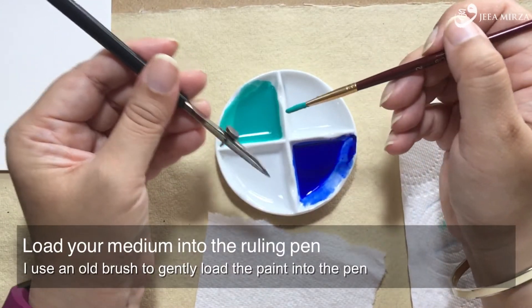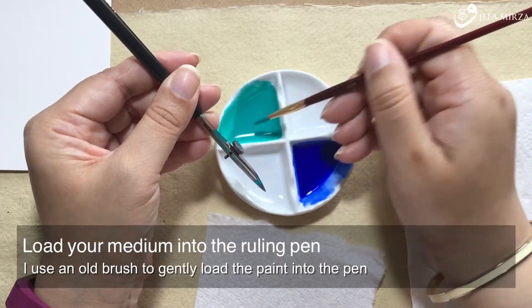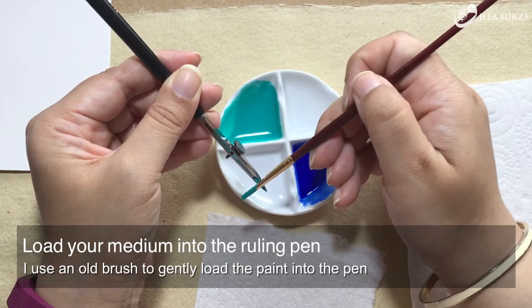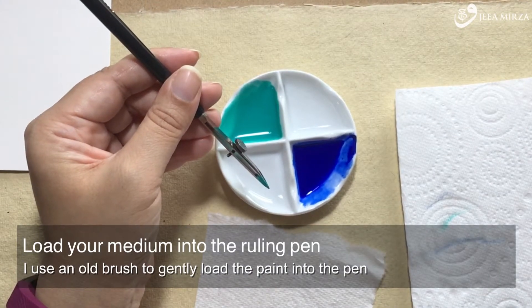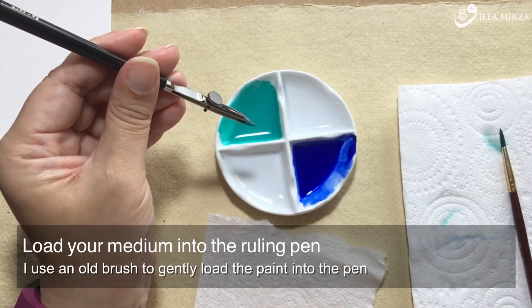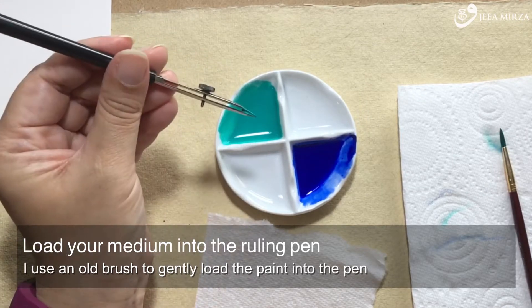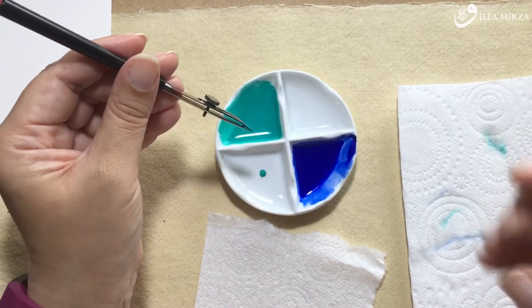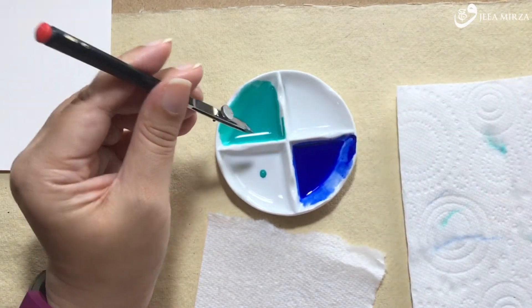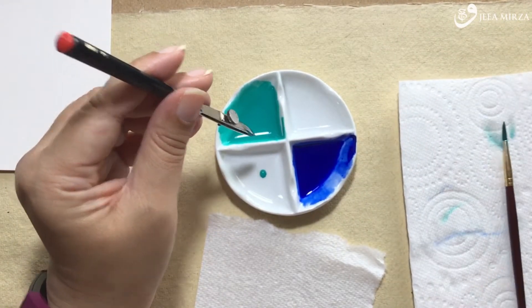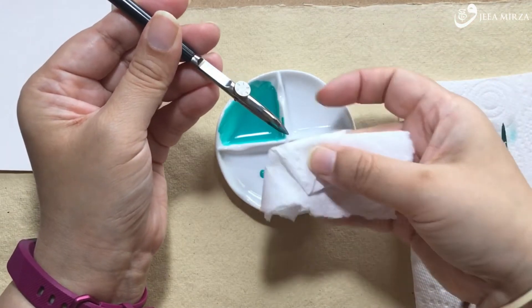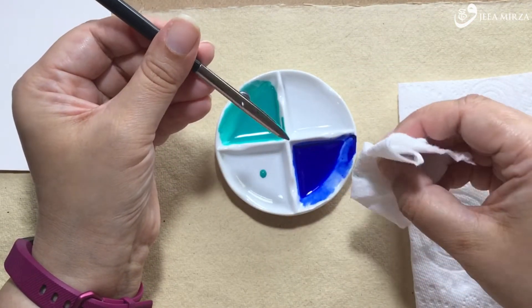The next stage really is to load up the ruling pen with your chosen medium. As you can see, I'm using a brush to gently stroke paint into the gap between the two arms. It's important to note, what we never do is we never dip the nib of the ruling pen into the paint. You don't want to damage the fine points, and this is not a dip pen. I'm also showing you here that it doesn't take too much force or energy for the paint to drip. So you do need to be careful. If the consistency is right, it shouldn't just drip, but any sudden movements or jerking, and you are going to have a spill on your hands.